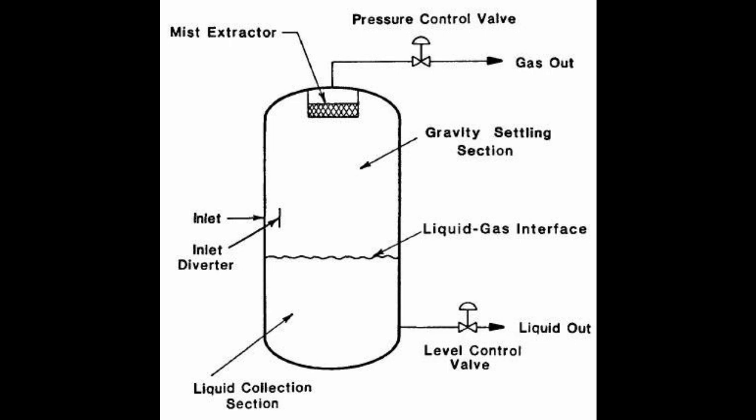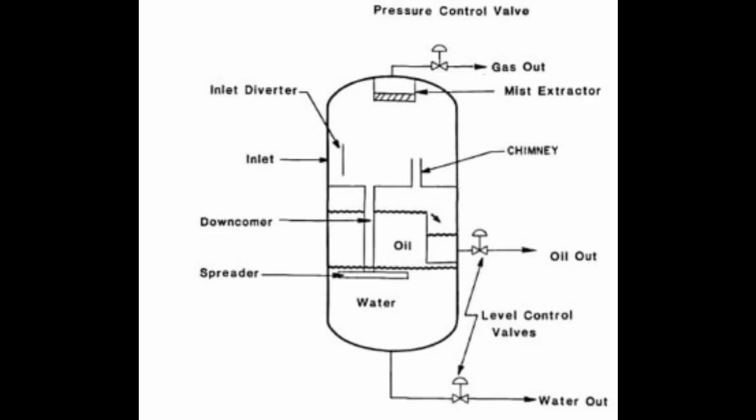Two-phase separators have the same basic operating principle as three-phase systems but can only separate oil and gas mixtures. Like a three-phase system, it can be oriented as a horizontal two-phase separator or vertical two-phase separator. Due to their compact nature, vertical two-phase separators can only accommodate smaller volumes of fluid that require shorter residence times.